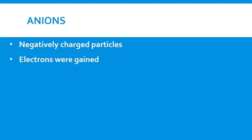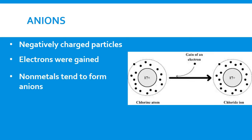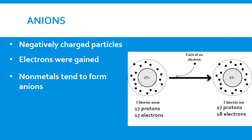Anions are negatively charged particles formed when electrons are gained. Non-metals tend to form anions. The chlorine atom forms an anion called the chloride ion when it gains an electron. It still has 17 protons, so the identity of the atom has not changed — it's still chlorine. But it gains one more electron, going from 17 to 18 electrons. So we have one more negative charge than positive charge, resulting in a particle with a negative charge.